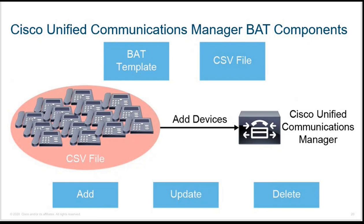For BAT, there are some key components. There is the BAT template — a default file that exists on the CUCM which you can download, make changes, add users or phones, and upload back for bulk administration. There is also a CSV file for adding devices: download the CSV format file, modify it with the required information, and then upload it to the CUCM.